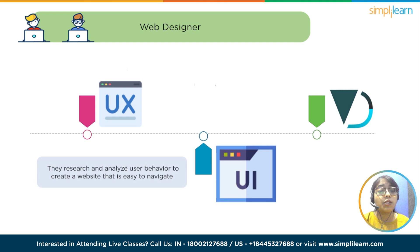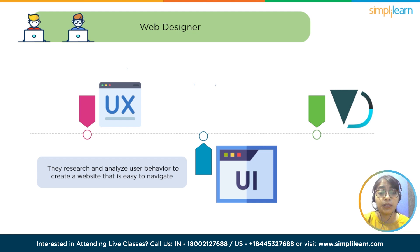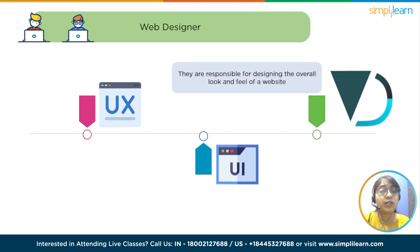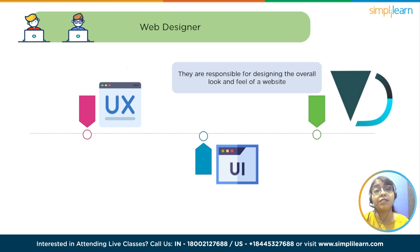The second type is User Interface (UI) designers, who focus on designing the visual elements that users interact with on a website, such as buttons, menus, and other interface elements. They are responsible for creating interfaces that are visually appealing and easy to use. After that, we have visual designers, who specialize in creating the visual elements of a website. They are responsible for designing the overall look and feel of the website, including layout, color scheme, and typography, using their artistic skills to create a visually appealing and cohesive design.